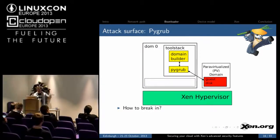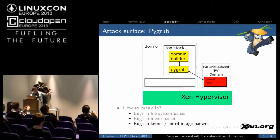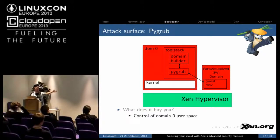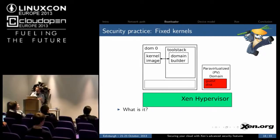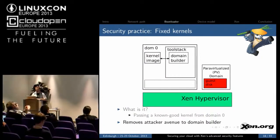If we assume that the attacker controls the guest disk, how can he break in? There may be bugs in the file system parser in PyGrub, there may be bugs in the menu parser, and there may be bugs in the domain builder in the part that parses the kernel or initrd image. If you break in, it buys you control of the domain zero privileged user space — and because this user space needs to be able to read and write guest memory, it basically gives you control over more or less the whole system. One way to mitigate this is called fixed kernels: rather than using PyGrub, you enforce that you only pass a known good kernel from domain zero. This completely removes the avenue of attack for the attacker to attack the domain builder or the system.